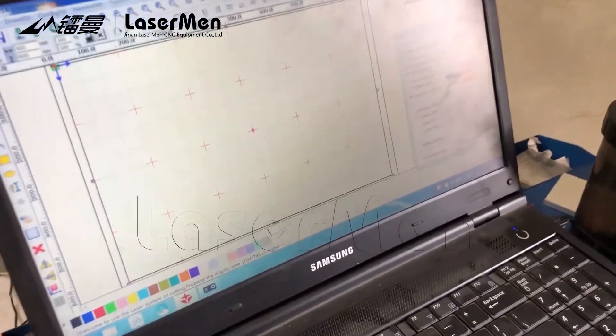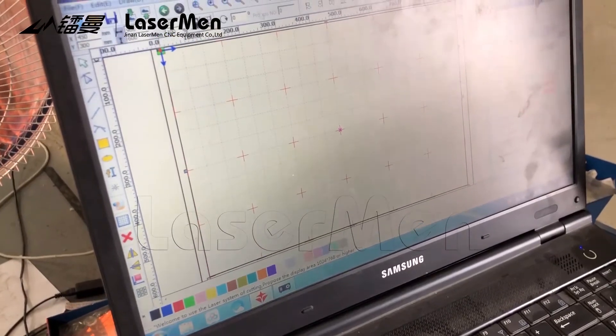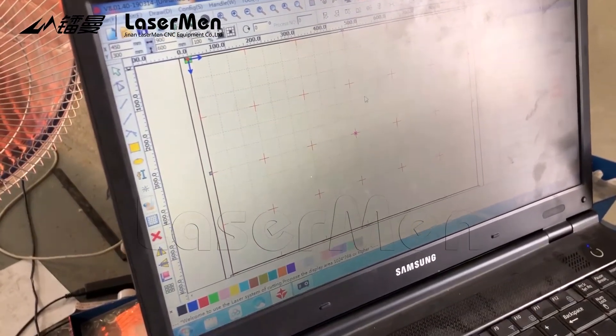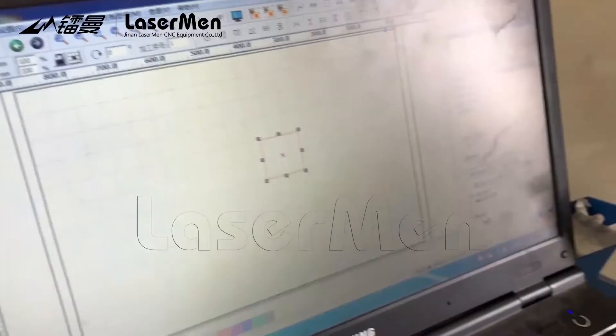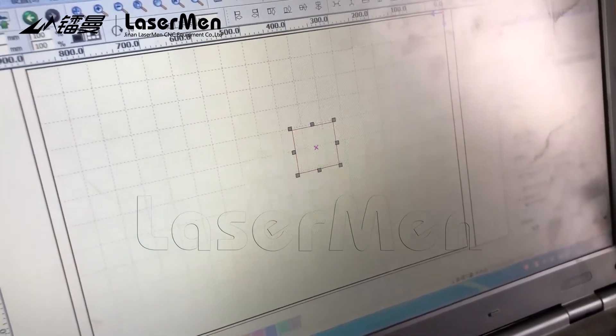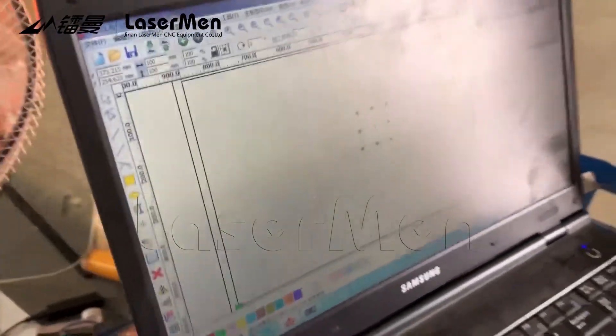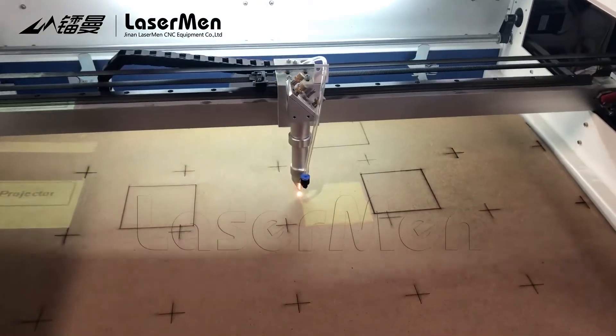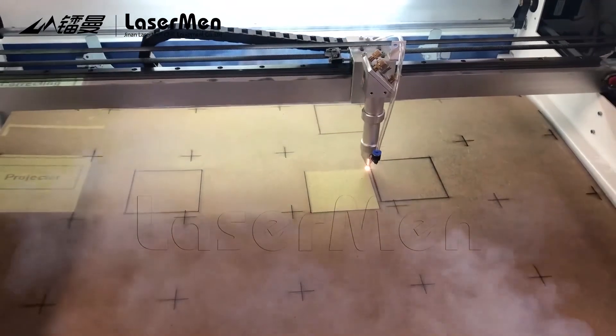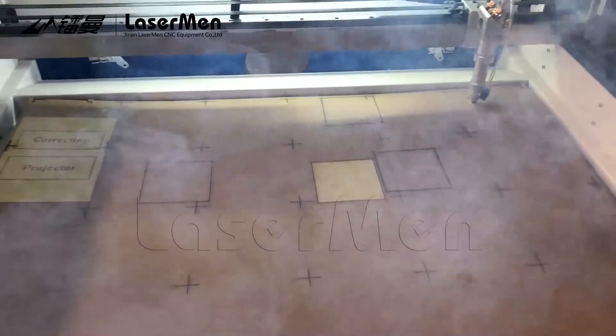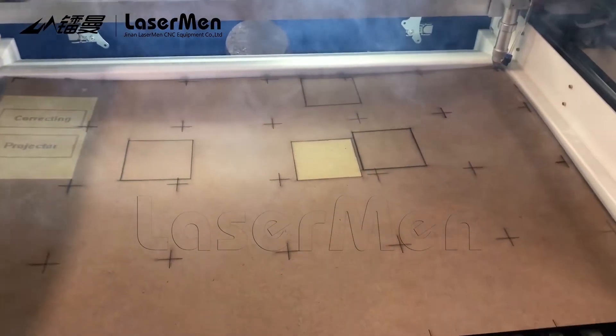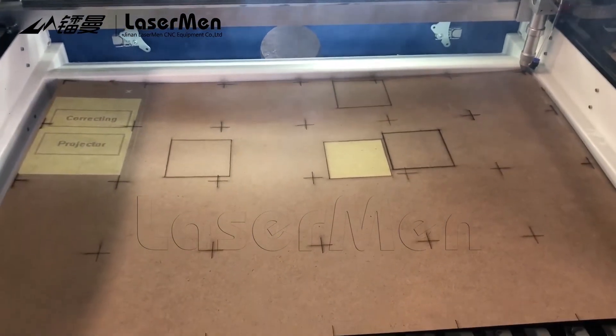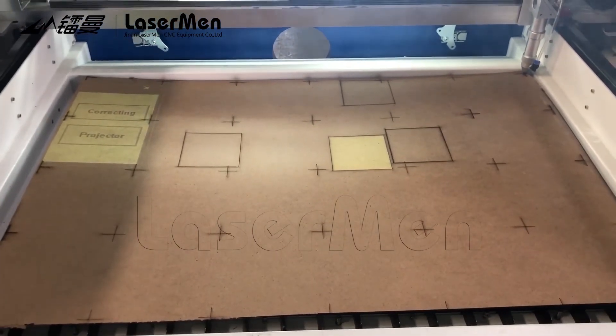And the mouse back to the software. We try the cutting with the projector. We put any design, we put a rectangle here, and start cut. We will see the machine cutting. The laser head actual cutting is in the same position of the projector rectangle, so the machine is well calibrated. That's all, bye bye.